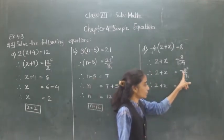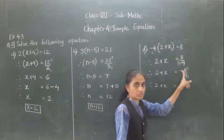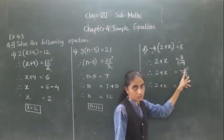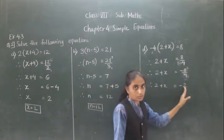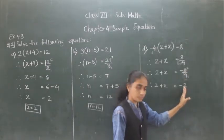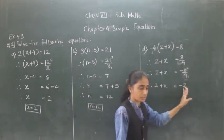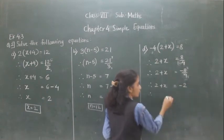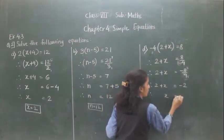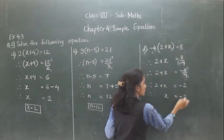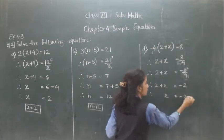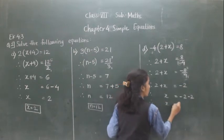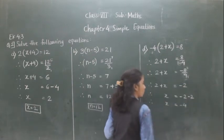In division, one number is negative and one number is positive, so the quotient will be negative. We got negative 2. Now 2 is here as plus; if we transfer to the right hand side it will become minus. So minus 2 minus 2 gives us x is equal to minus 4.